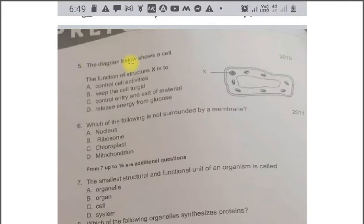The first question is the diagram below shows a cell. This is the diagram. The function of structure X is to A. Control cell activities. B. Keep the cell turgid. C. Control entry and exit of material. D. Release energy from glucose. Out of this the correct answer is the option D which is release energy from glucose. The structure X is mitochondria.